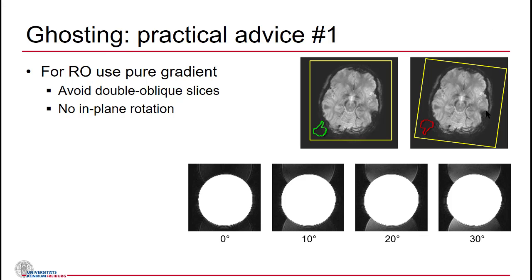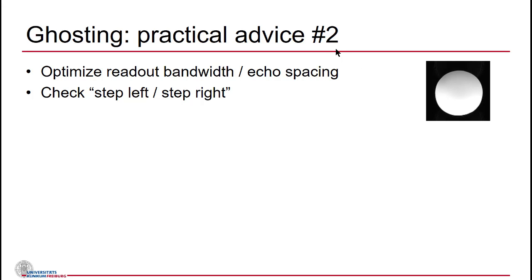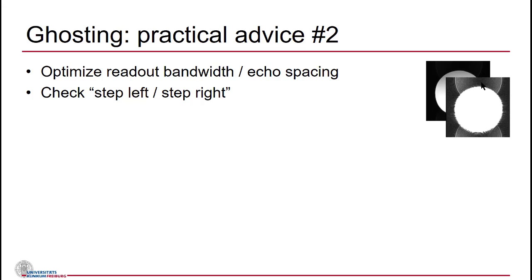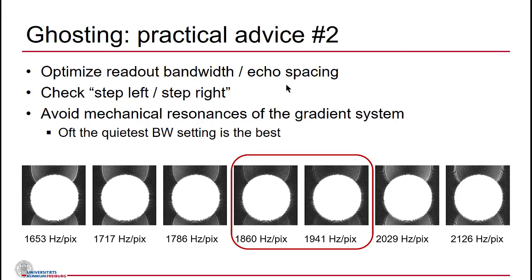Another piece of advice: look at your readout bandwidth or echo spacing. You should try to use echo spacing as short as possible, but that's not the whole story. Stepping the bandwidth up and down and overscaling the images shows that certain bandwidths affect ghosting quite dramatically. Two settings typically show the lowest possible ghosting, because of electromechanical coupling in the gradient system. If you listen to your EPI at different bandwidth settings, the quietest settings will usually produce the lowest ghosting.